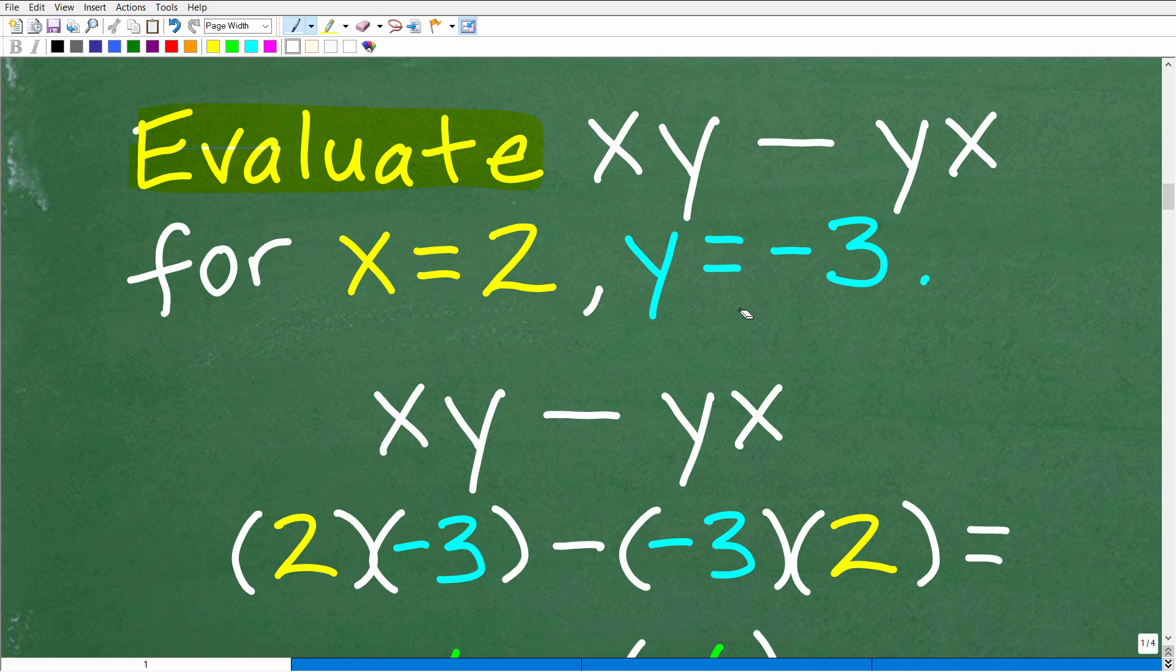So xy minus yx. x is 2 and y is negative 3. I'm going to plug in for x and y with parentheses. So parentheses 2, that's x, parentheses negative 3, minus - here's the minus or subtraction operator - parentheses, here's y right here by itself, negative 3. So y is negative 3. I'm plugging in with parentheses. And then x is 2.